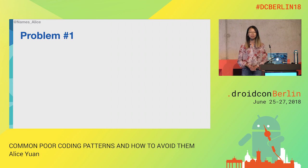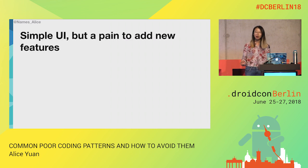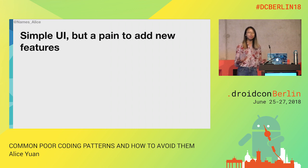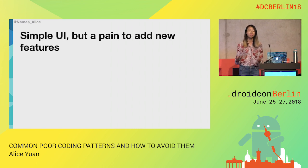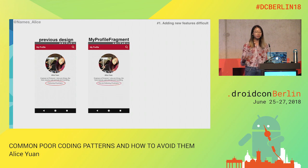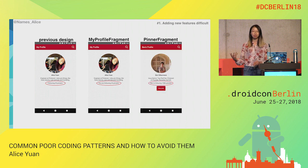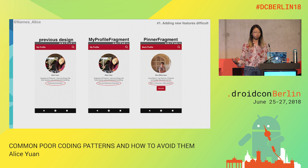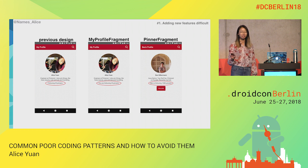Let's get started. Problem number one. Our first problem is simple. We have a simple UI, but for some reason it's a lot more difficult to add features than I initially intended. Looking at the design, we can see that I am following 25 pinners. In my new design, all I want to do is change the text to say that you are following 25 pinners, or if it's someone else's profile, the pinner fragment, Ben is following X number of pinners.